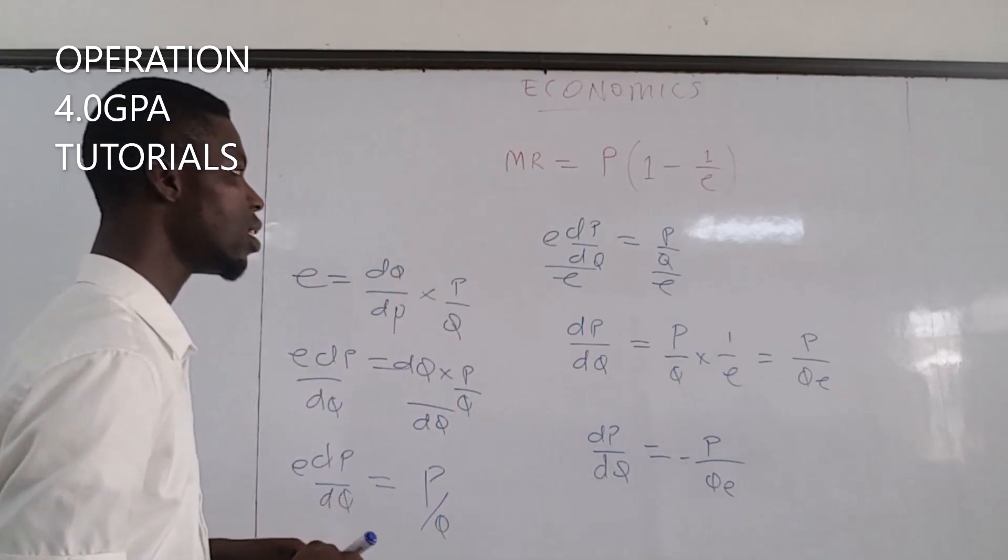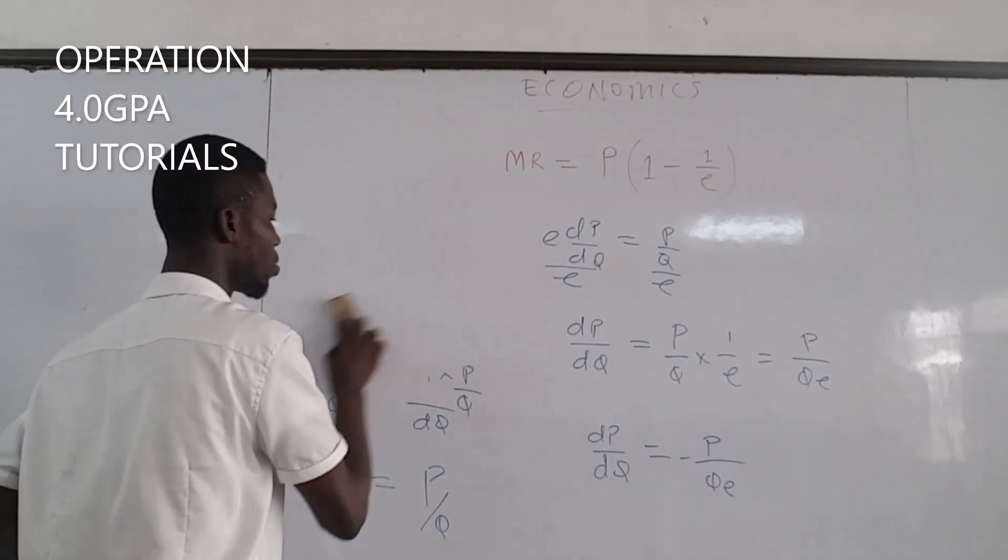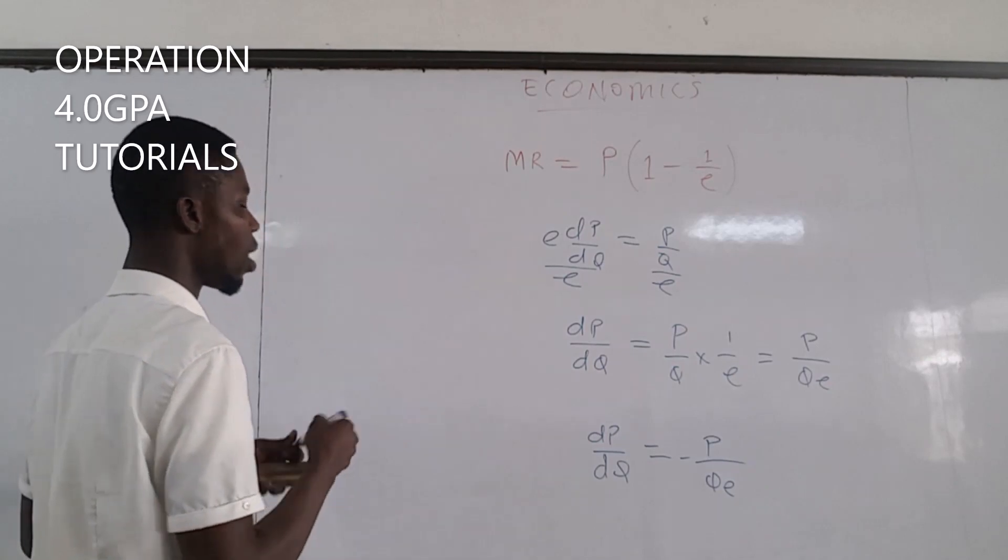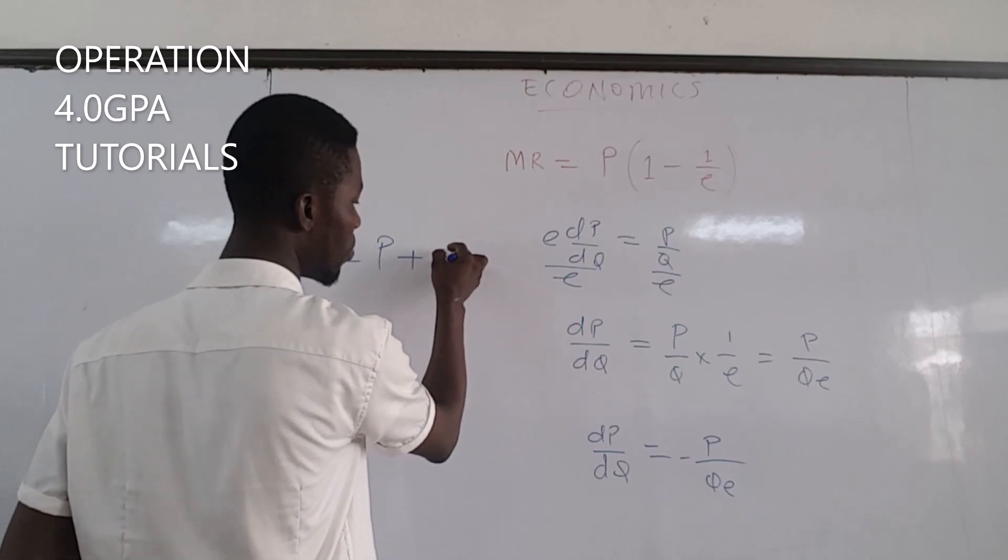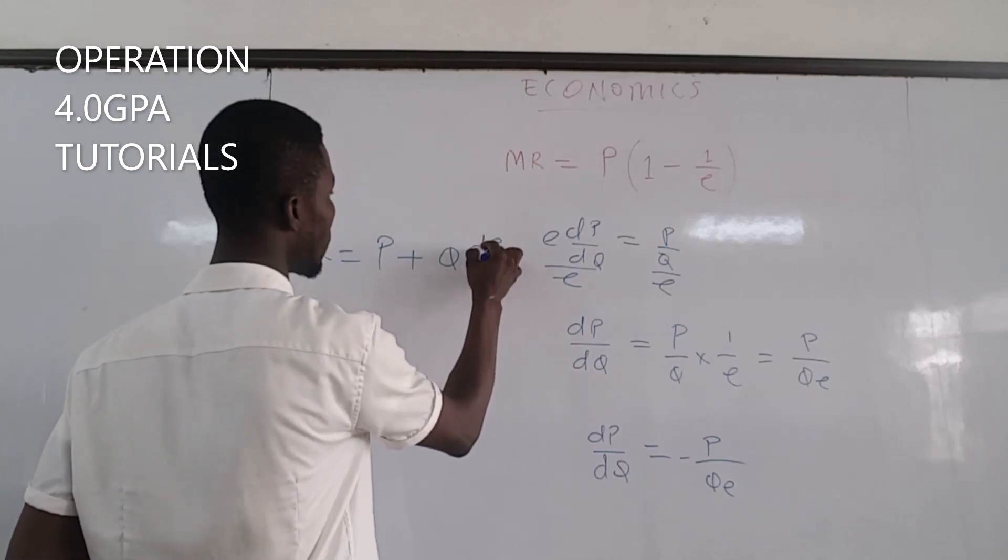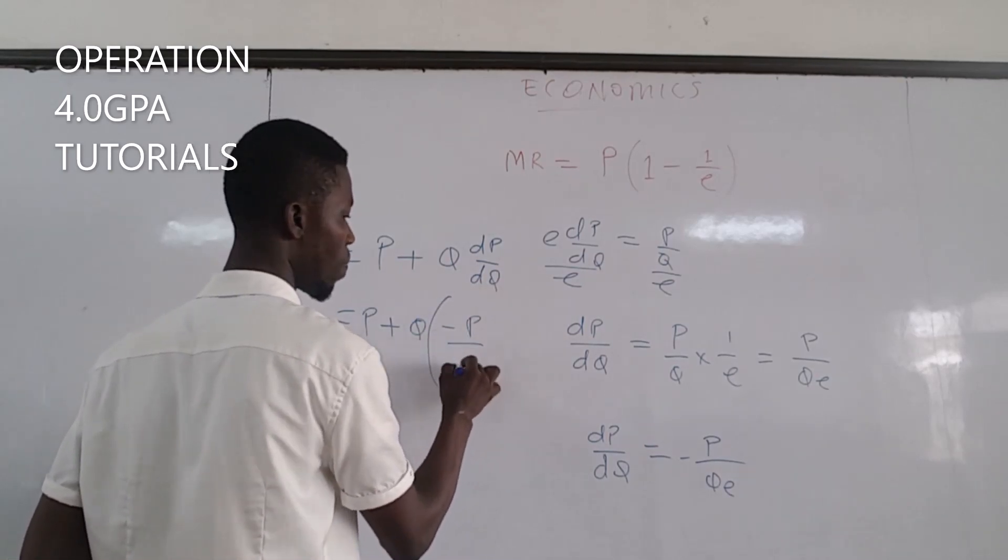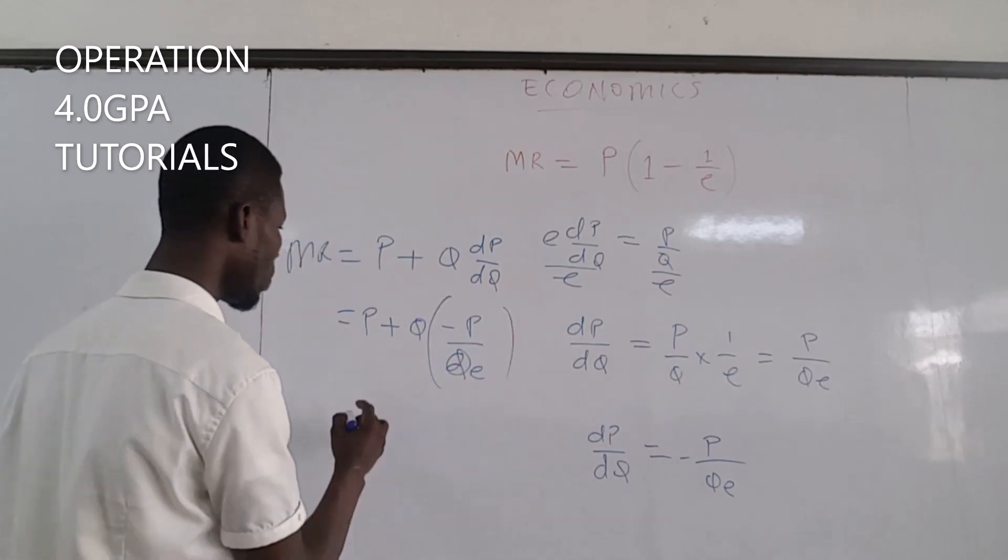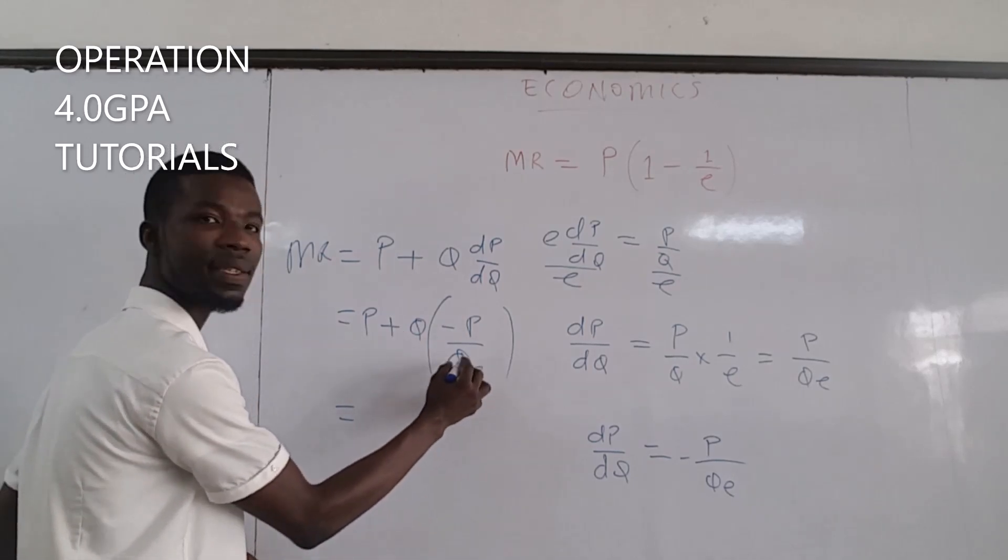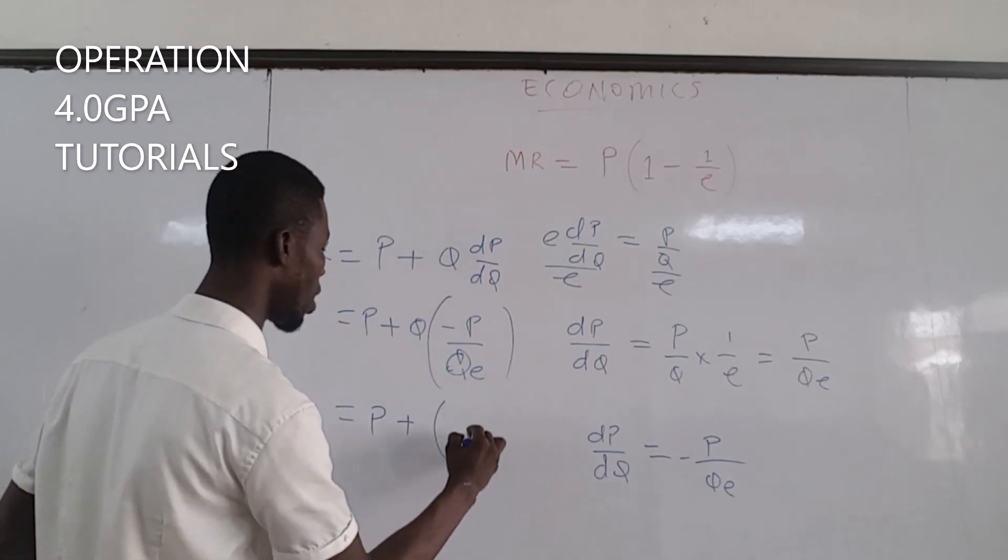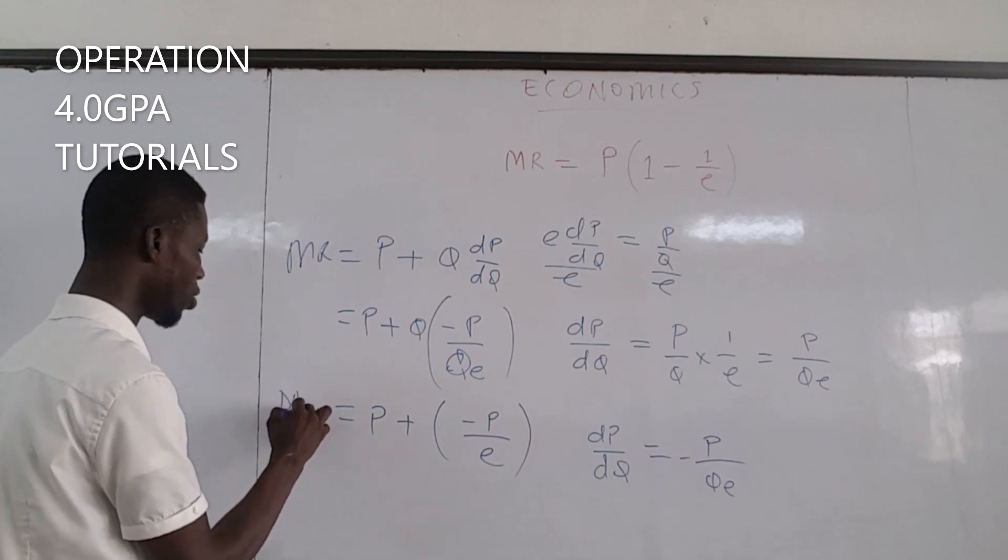So we substitute this into the marginal revenue we had. That would give us MR equal to P plus Q times the bracket minus P over QE. We can see that this is Q, this is also Q. So we can cancel out to have P plus the bracket minus P over E, giving us our marginal revenue.